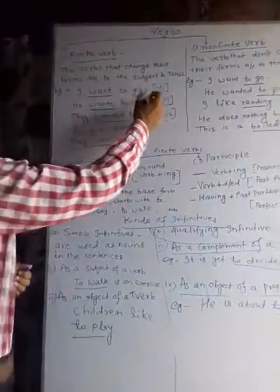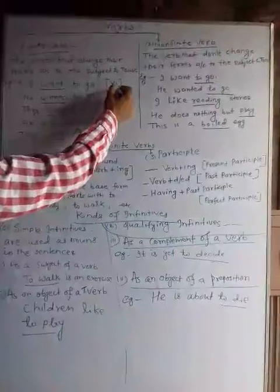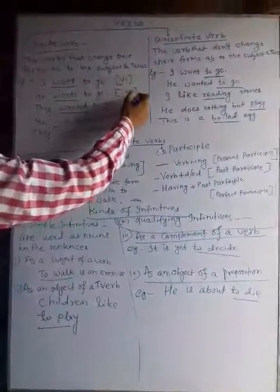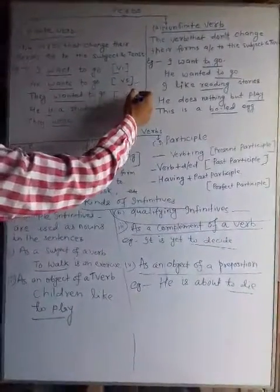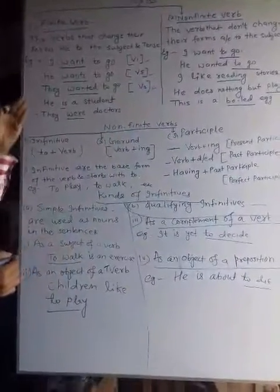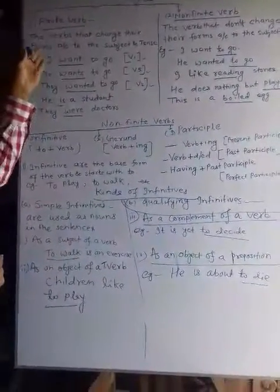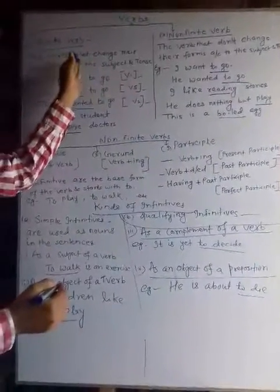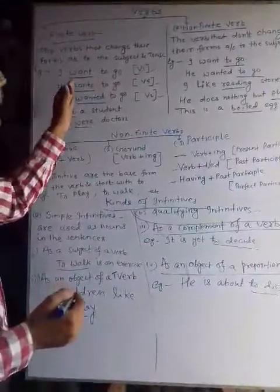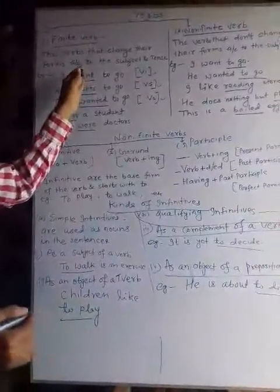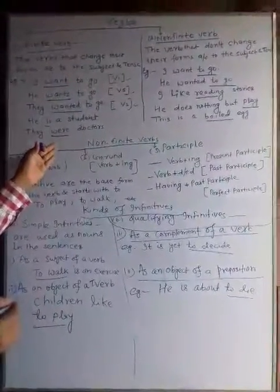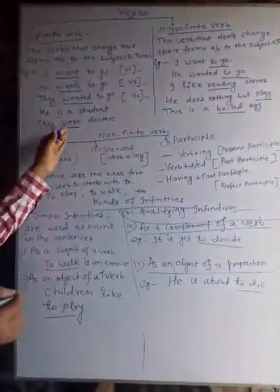Clearly, you can see here. In the first sentence, the form of verb is V1. In the second sentence, the verb form is V5. In the third, you can see V2. So the verb forms are changing here according to the subject and the tense in the sentence, because these sentences are affected by the tense and the subject. So the verb becomes finite.